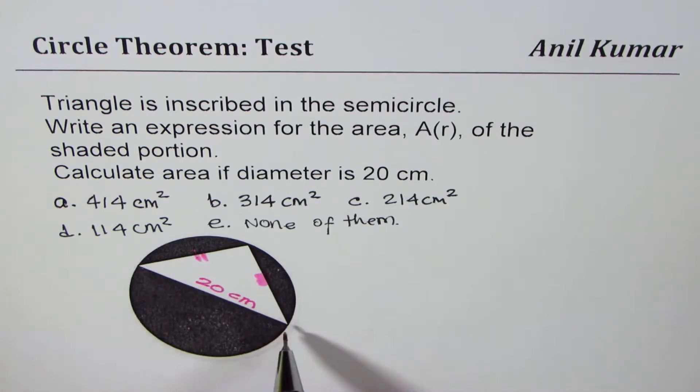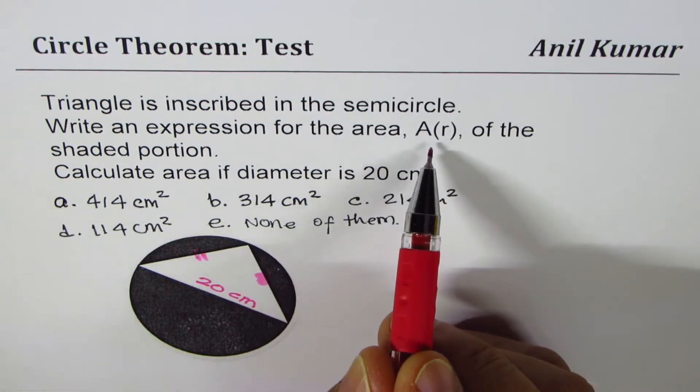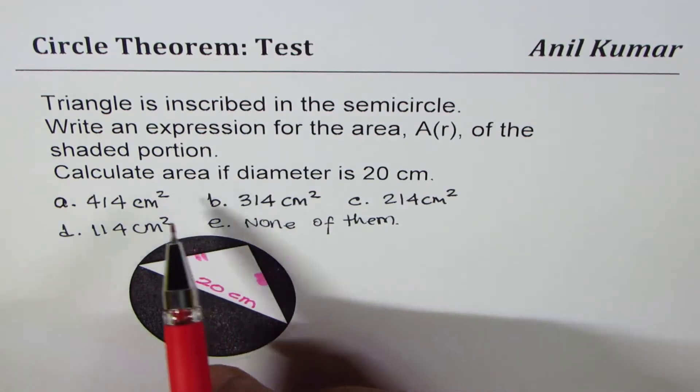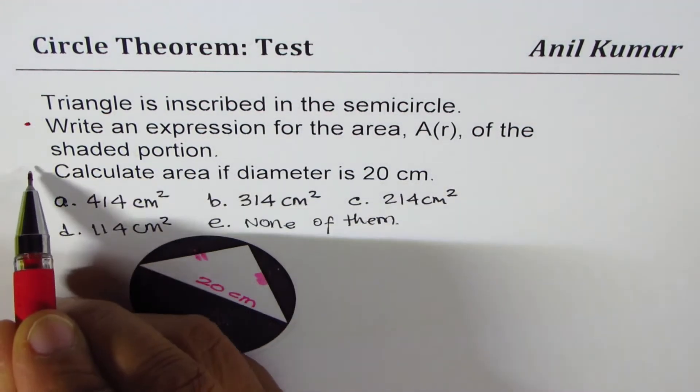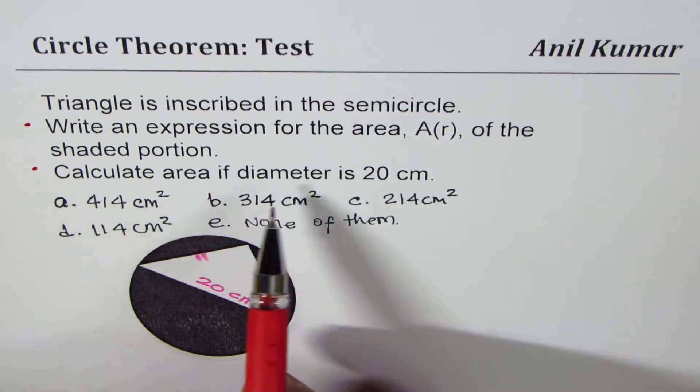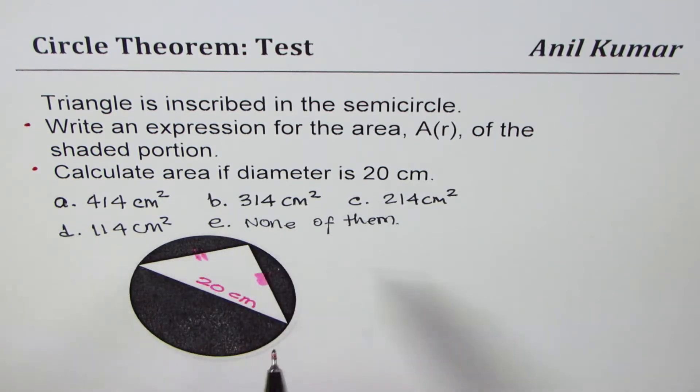That means the longest side which you see here is the diameter. Write an expression for area, AR, of the shaded portion. That's the first part. And the second part is a multiple choice question. Calculate area if diameter is 20 centimeters. These are your five choices.